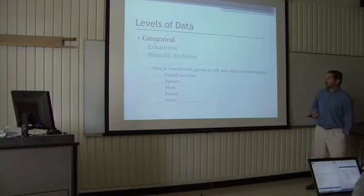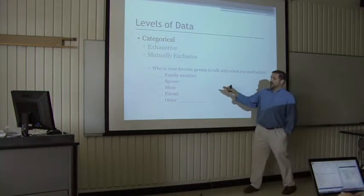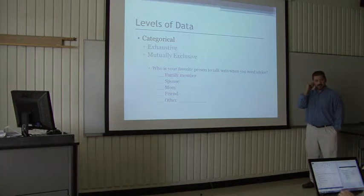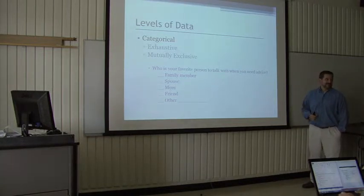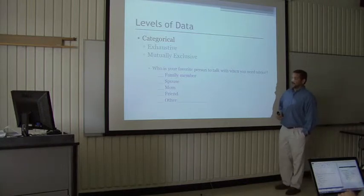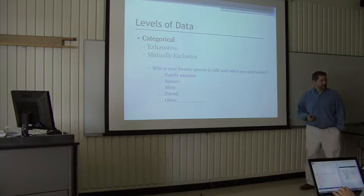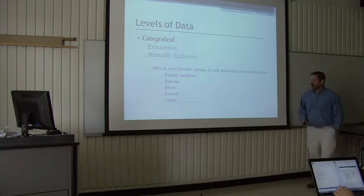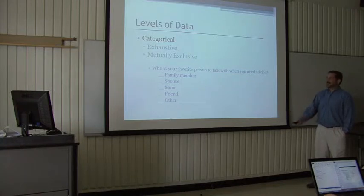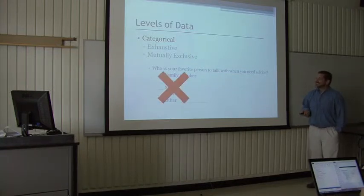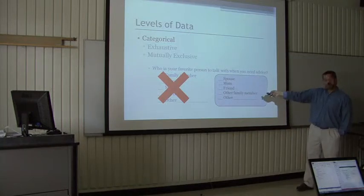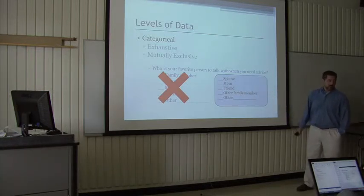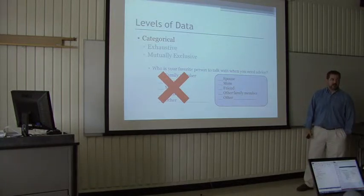Categories also need to be mutually exclusive. 'Who's your favorite person to talk to when you need advice? Family member, spouse, mom, friend' — some people would consider mom and spouse both to be family members, so they're not mutually exclusive. Fix it: Spouse, mom, friend, other family member, or other. You'd probably also need to rework the question, but you get the idea.